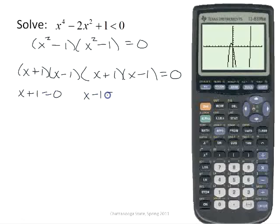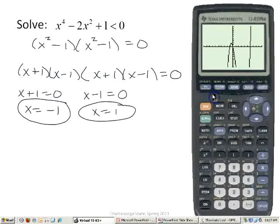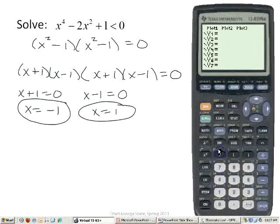Each of these is going to factor into (x + 1)(x - 1). So when I set these equal to 0, I have x + 1 and x - 1. Then these are going to be exactly the same. So I am going to have zeros of x = -1 and x = 1. Let's look at this graph.